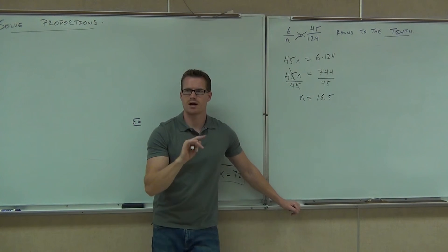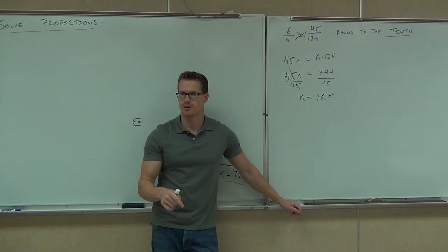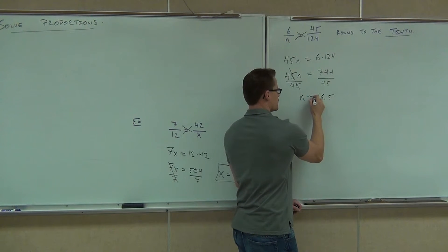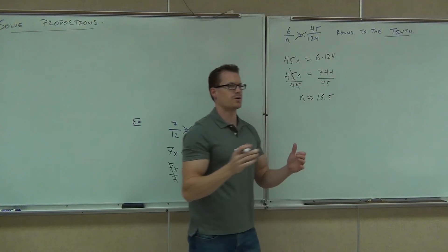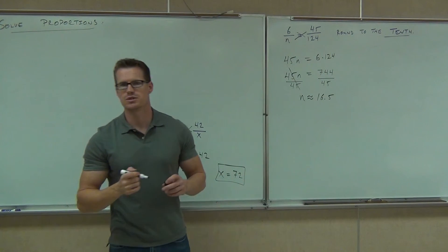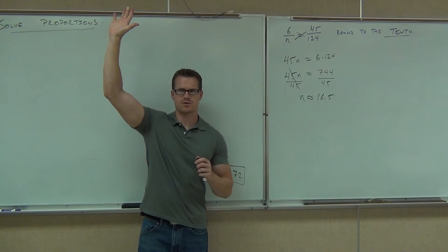There's one mistake right now on the board. What is it? We don't have the little squiggly line for approximating. Great. So if you put 16.5 equals, technically you're wrong because it's not equal to 16.5. However, you put this, and then I know you rounded it. Then I know it's approximately that amount. That's the appropriate symbol you need to use there if you're going to round.